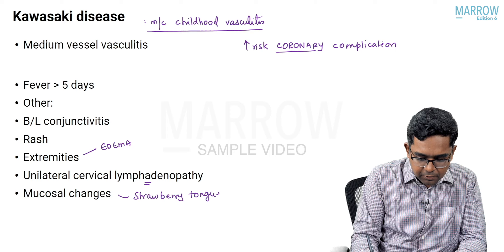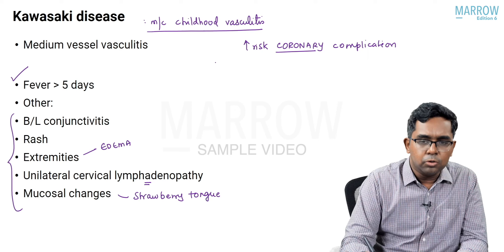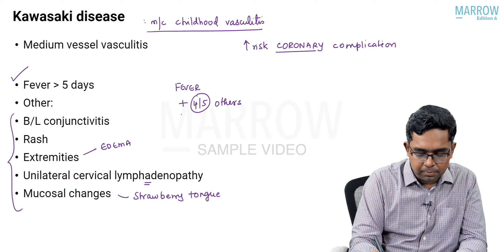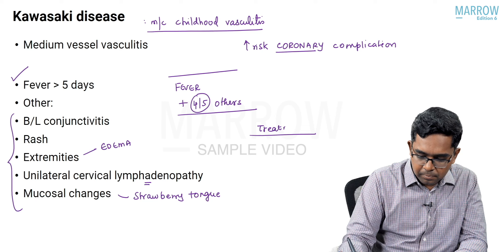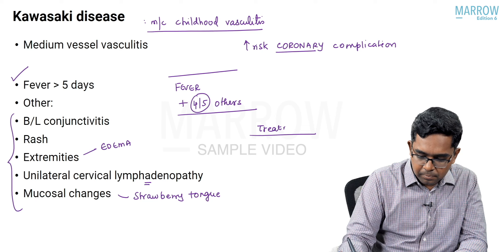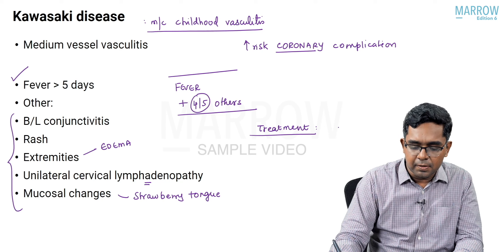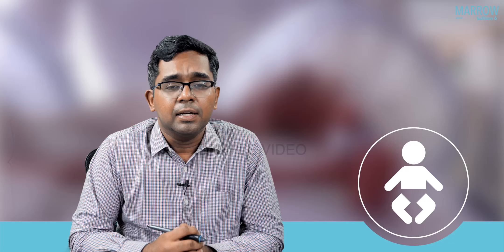To diagnose Kawasaki disease, fever must be present along with four out of the five CREAM criteria. The best drug for treatment is IVIG — intravenous immunoglobulin. When started early in the course of Kawasaki disease, IVIG greatly decreases the incidence of coronary artery aneurysms, making it the cornerstone of management.